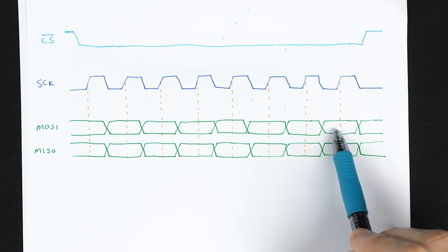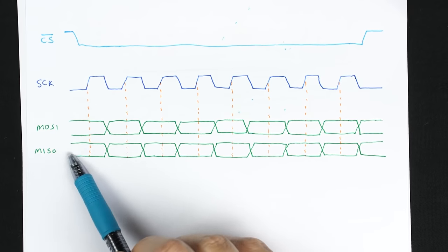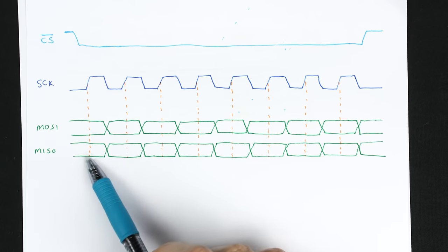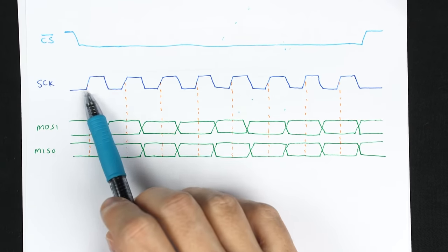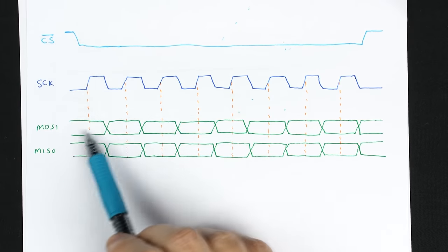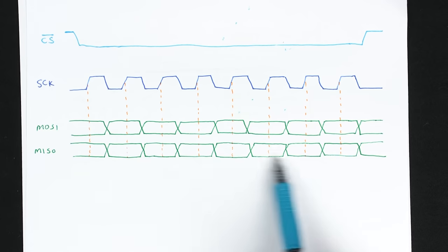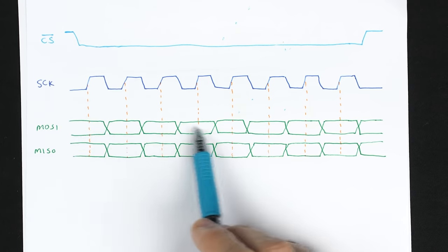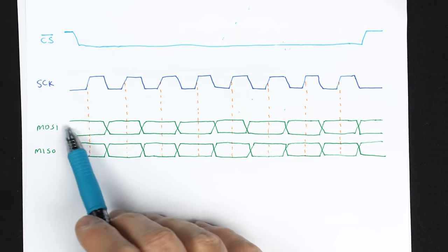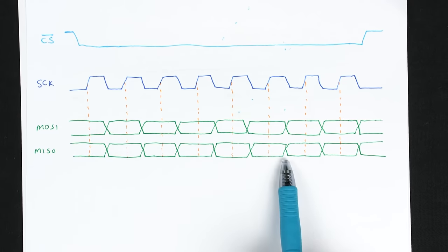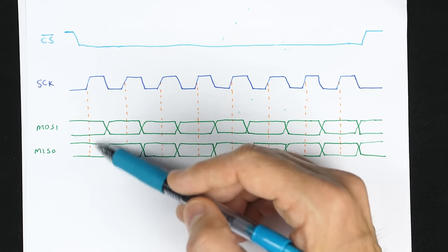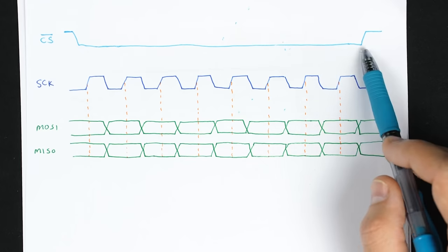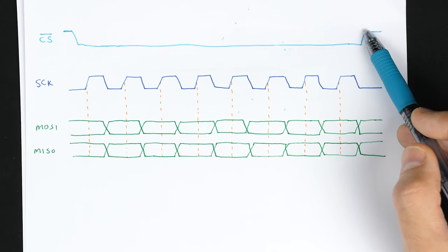Simultaneously, the device is able to send data back through the MISO signal. Every time the controller sends a bit by toggling the clock, the device also gets to send a bit that can be read by the controller. If the controller only wants to send data, it can set chip select low, toggle the clock, and send data out the MOSI line while ignoring MISO. Alternatively, if it wants to receive data, it can set chip select low, toggle the clock, send dummy data out MOSI, and read on MISO. At the end of the transmission, chip select is pulled high again.